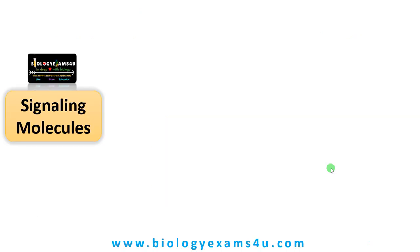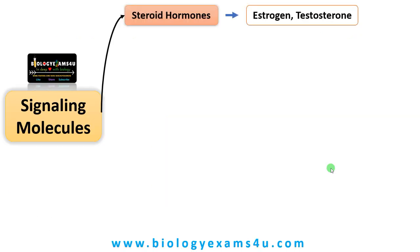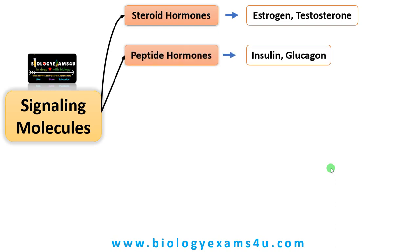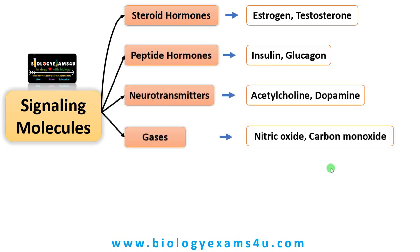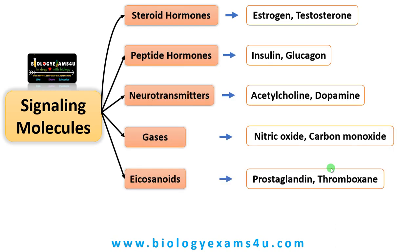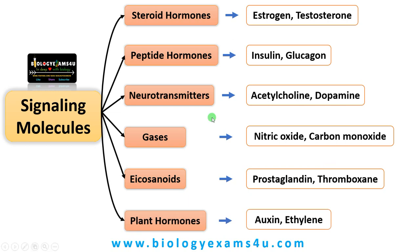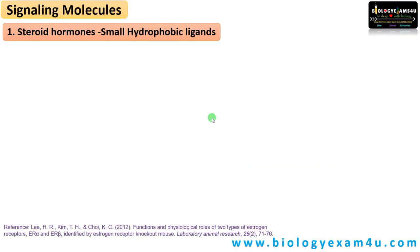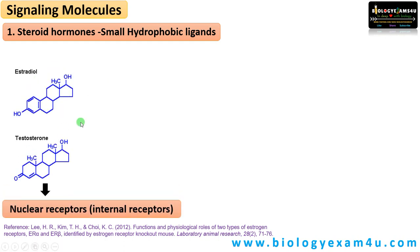Now let us see the six types of ligands: steroid hormones, peptide hormones, neurotransmitters, gases, eicosanoids, and plant hormones. Let's begin with steroid hormones. Steroid hormones are small hydrophobic ligands or signaling molecules which include estradiol and testosterone, all having nuclear receptors or internal receptors either in the cytosol or nucleus.